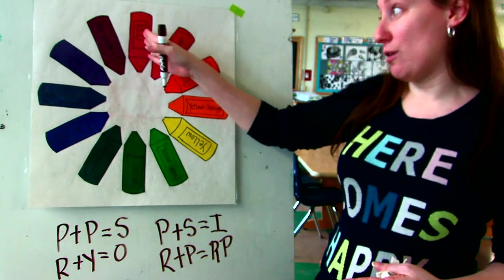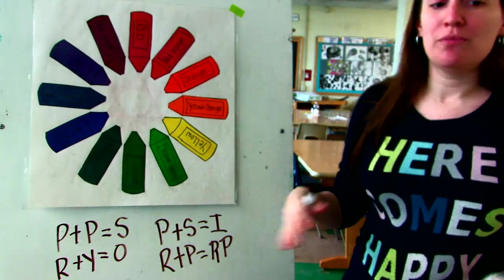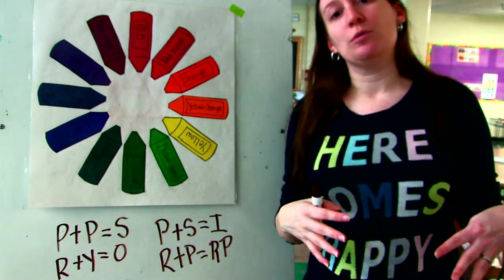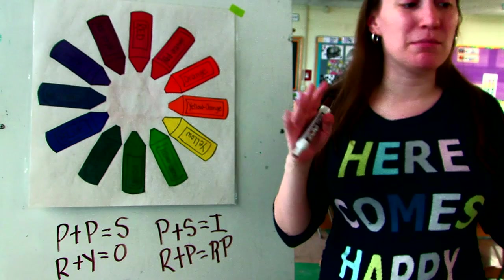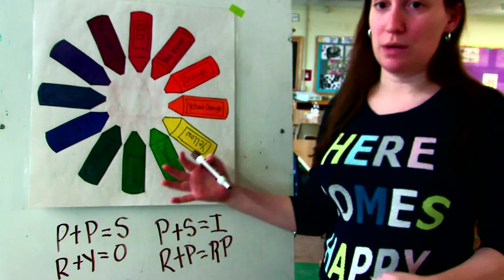So our color wheel goes from red all the way back again in a complete circle.